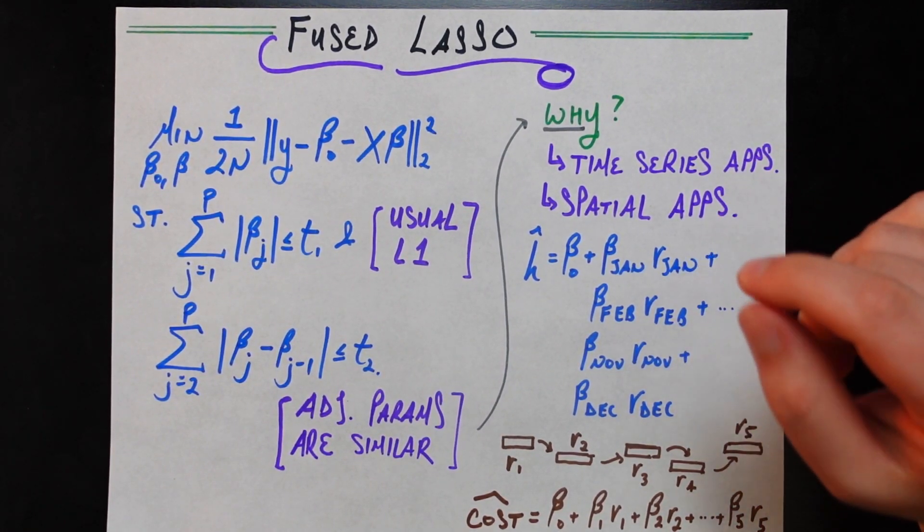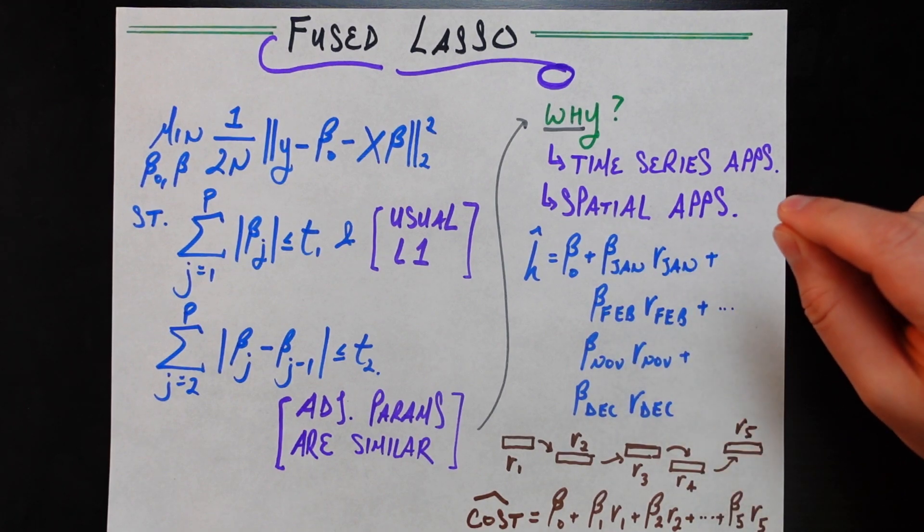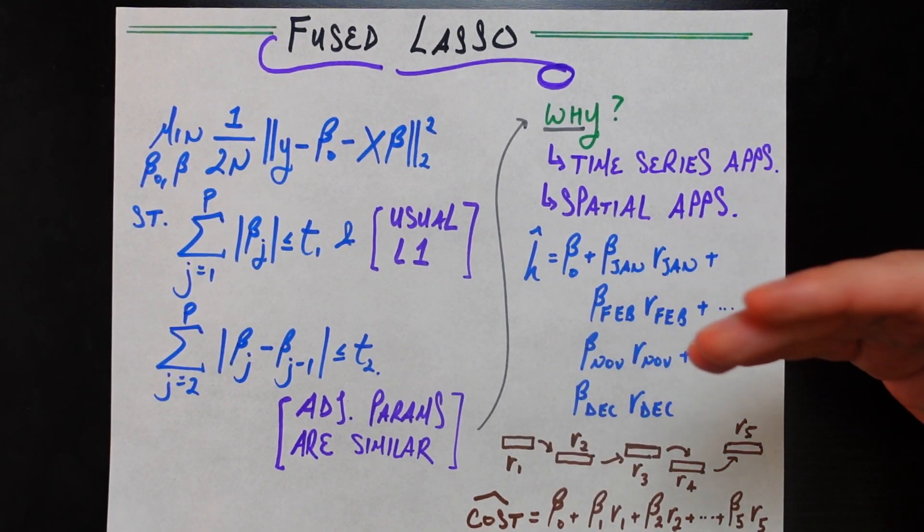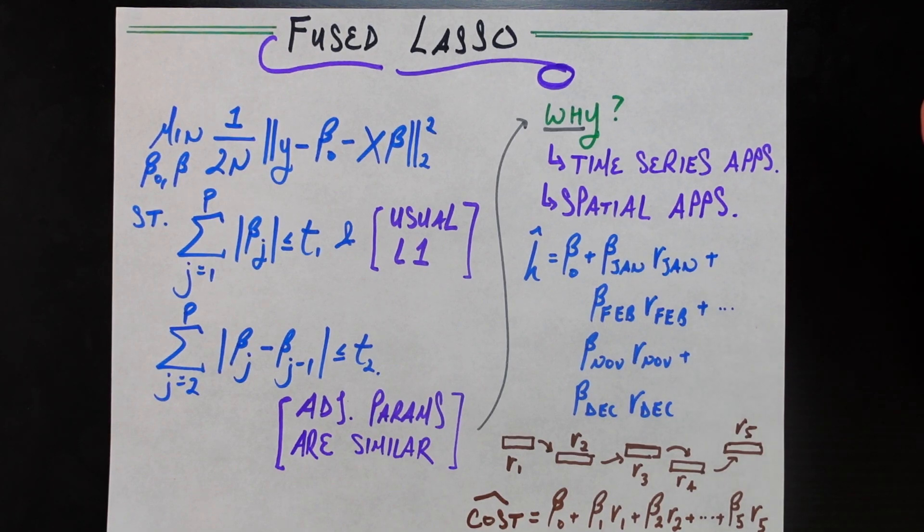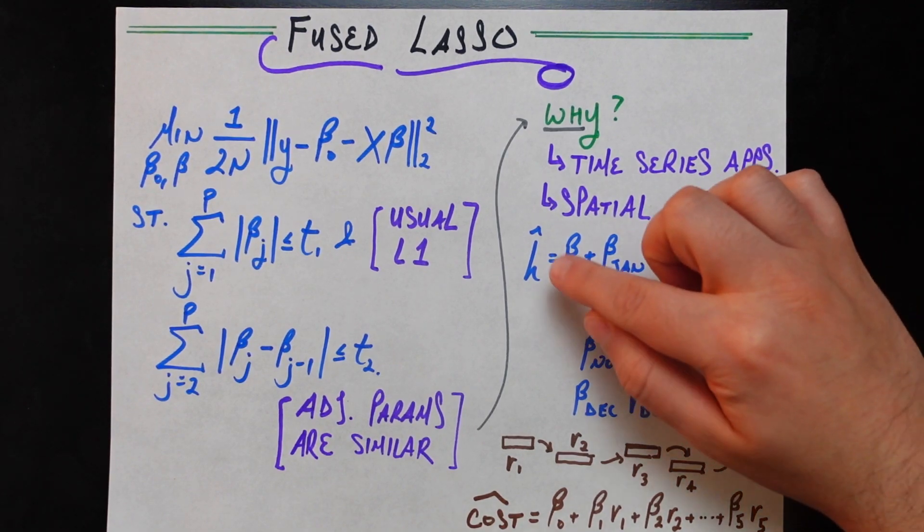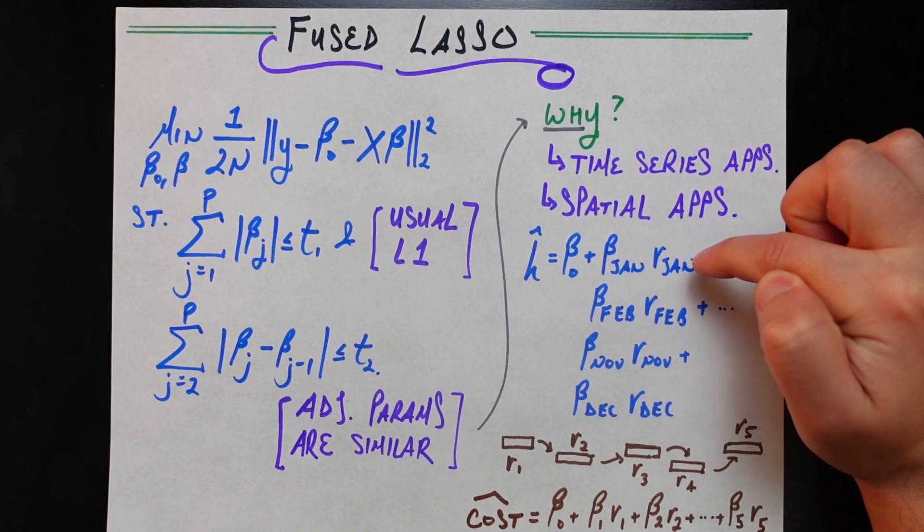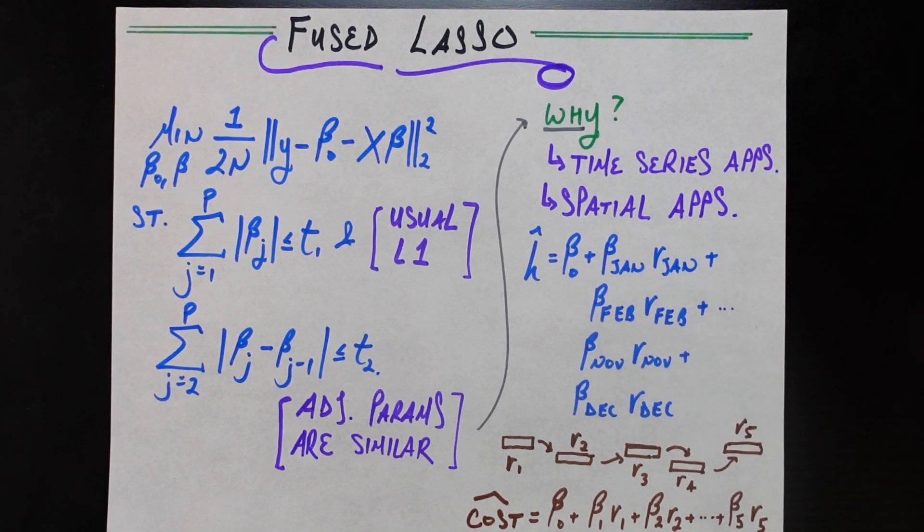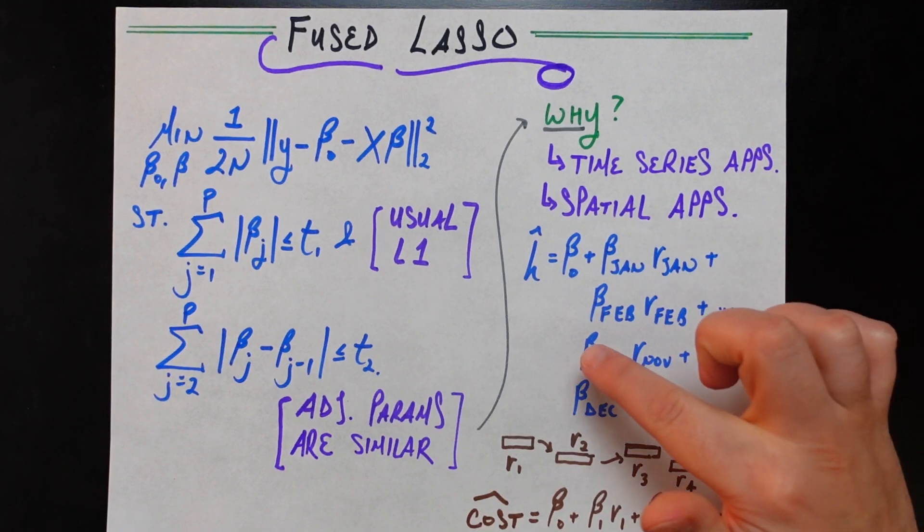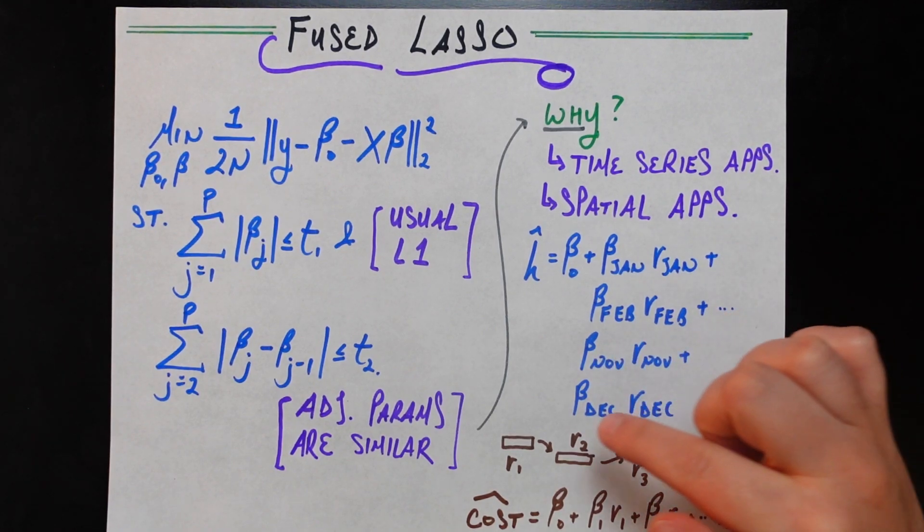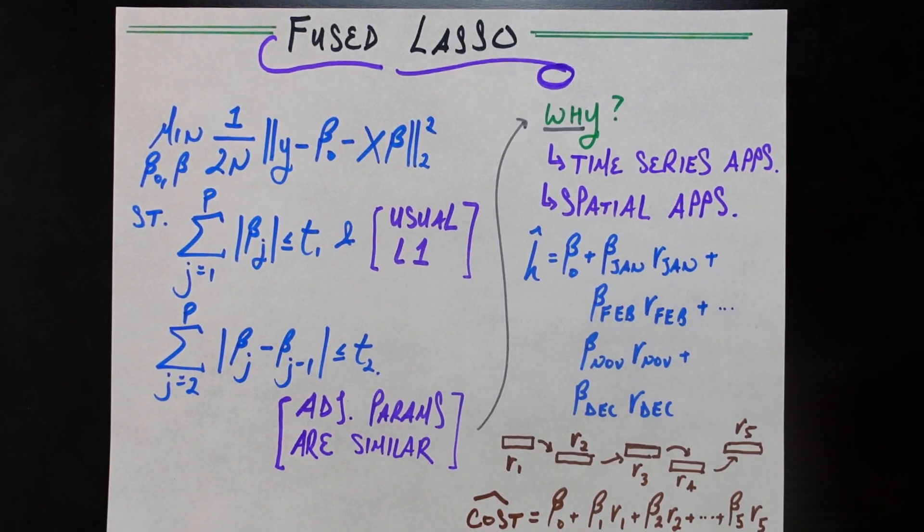Pretend that we're trying to predict the price of a house based on how much rainfall the city gets in January, February, March, April, all the way to December. And so, we're doing that using a linear model. So, we have our intercept beta 0. Then, we have beta January times the rainfall that you get in January, plus beta February times the rainfall you get in February, all the way down to beta November, rainfall you get in November, plus beta December, the rainfall you get in December.